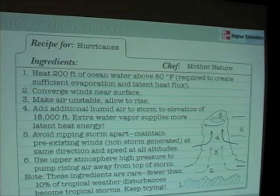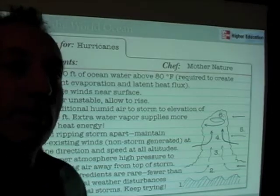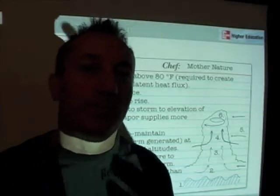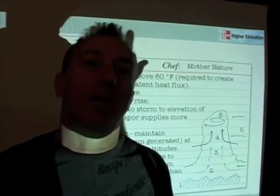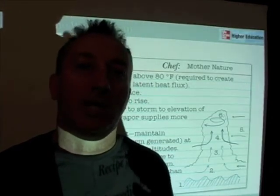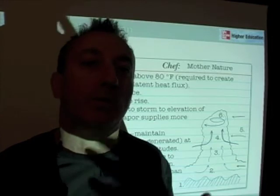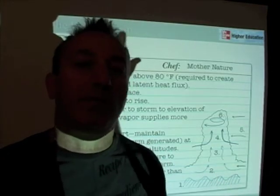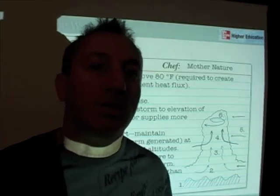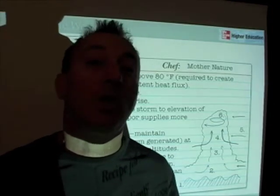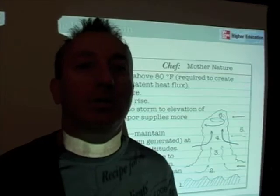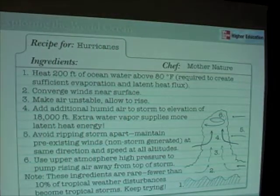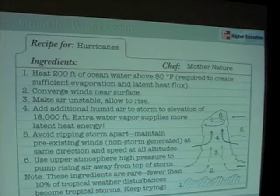It's this combination of circumstances that creates a hurricane, so it's no surprise that only about 10 percent of tropical disturbances, tropical storms, or tropical waves develop into full-fledged hurricanes. And an even smaller number of those turn into intense hurricanes, because the recipe is pretty specific — a lot of different things have to come together.